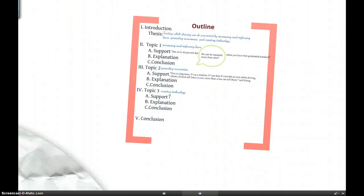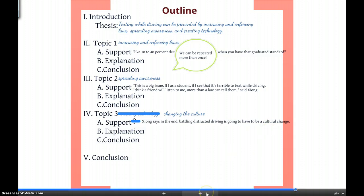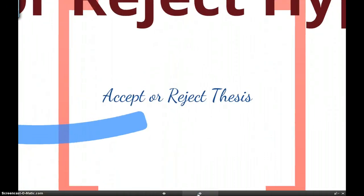So, let's go to our outline. So, take away creating technology, put in changing the culture, and then here's some support, talking about cultural change that I found in the essay. So, now we have enough support, and we can accept our thesis.